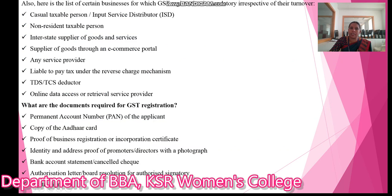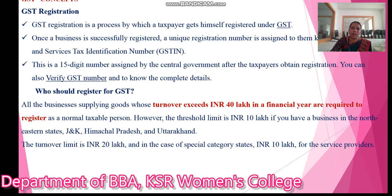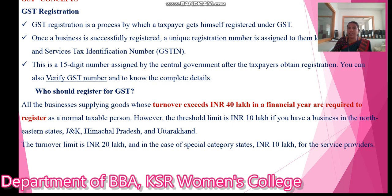GST Registration: GST registration is the process by which a taxpayer gets registered under the GST. Once a business is successfully registered, a unique registered number is assigned to them. That is known as the Goods and Service Tax Identification Number, or GSTIN. This is a 15-digit number assigned by the central government after the taxpayer obtains the registration.